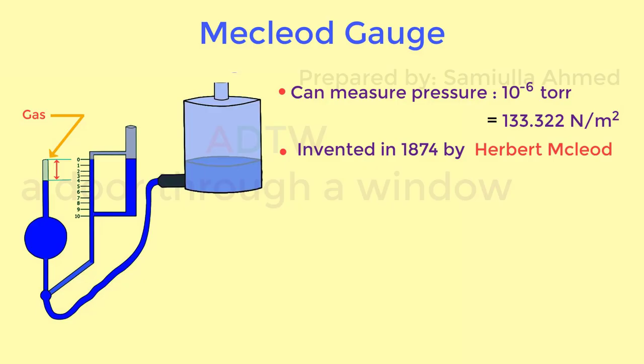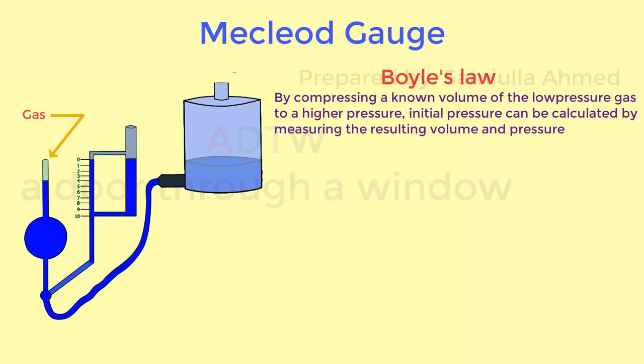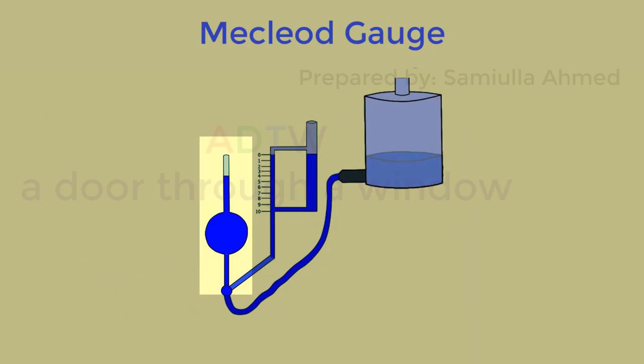The trapped gas gets compressed in a capillary tube. Vacuum is measured by measuring the height of the column of mercury. McLeod gauge works on Boyle's law, which states that by compressing a known volume of a low pressure gas to a higher pressure, initial pressure can be calculated by measuring the resulting volume and pressure.